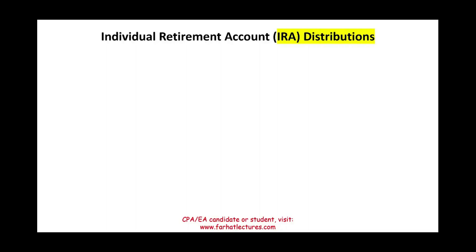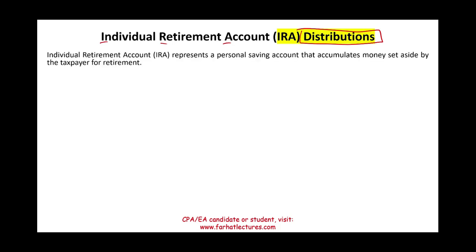Hello and welcome to the session in which we will discuss individual retirement accounts, or IRA. Specifically, we're going to be discussing IRA distributions. An IRA is a personal saving account — it's an account that's in your name, it's personal, it has nothing to do with your company. That's why it's called an individual retirement account. It accumulates money set aside by the taxpayer for retirement.